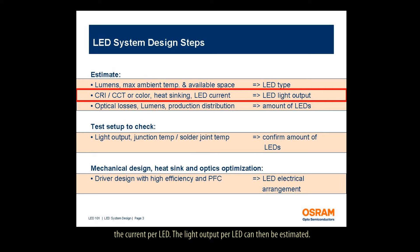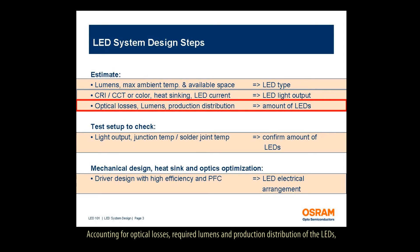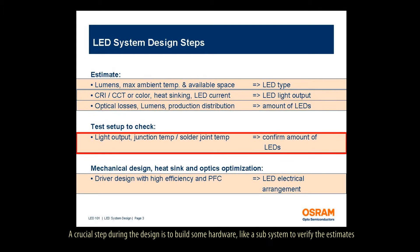The light output per LED can then be estimated. Accounting for optical losses, required lumens, and production distribution of the LEDs, the necessary amount of LEDs can be determined. A crucial step during the design is to build some hardware, like a subsystem, to verify the estimates and to check on the temperature behavior of the system.